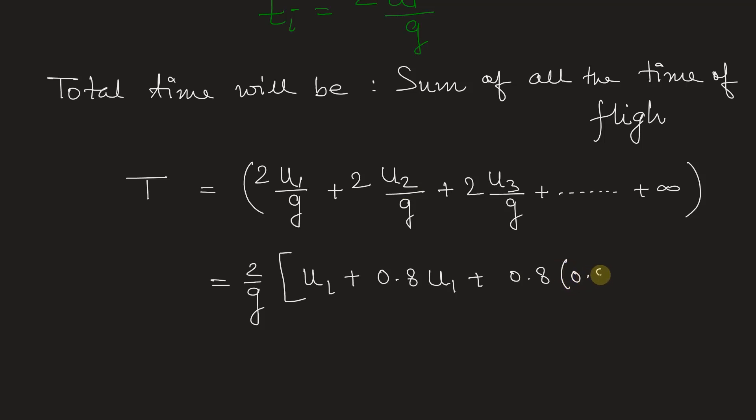So 0.8 × 0.8 times u1 plus similarly, the next one will be 0.8 cubed u1 because we are writing all the velocities in terms of u1.